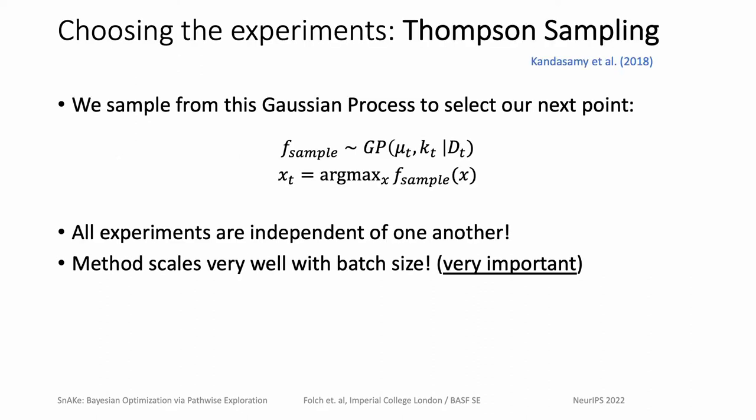To select the batch of experiments, we use Thompson sampling, which uses the Gaussian process's own randomness to achieve batch diversity. It works by taking a sample of the GP posterior and optimizes it to obtain an experiment design. Since all experiments will be independent of one another, it is scalable to very large batches. This is particularly important because our batches must be as large as the budget, which could be hundreds of points.